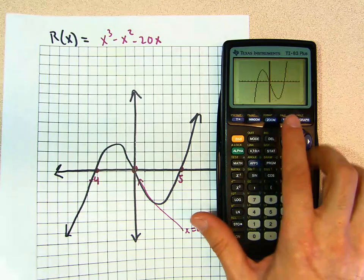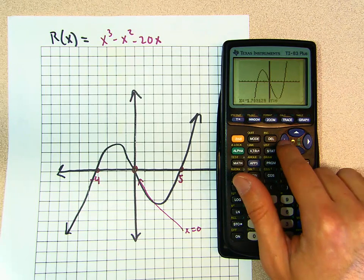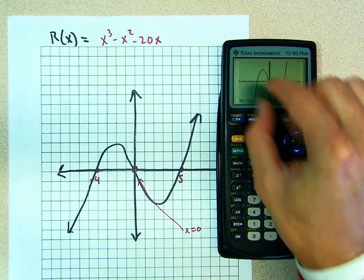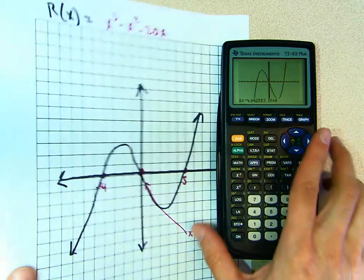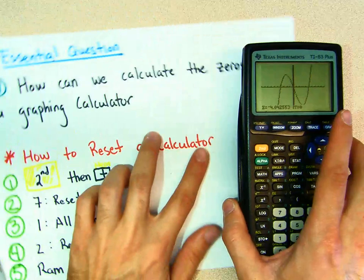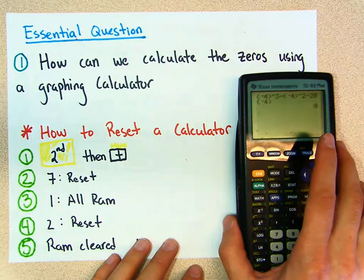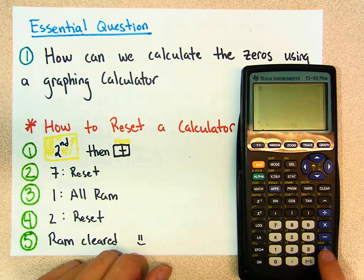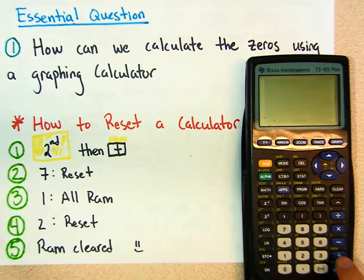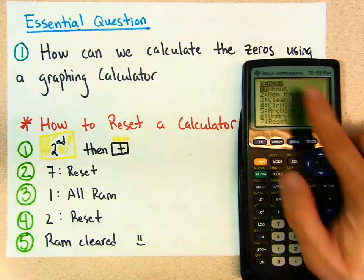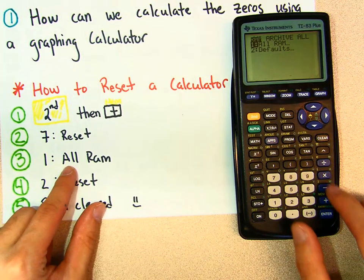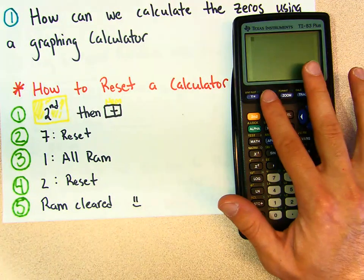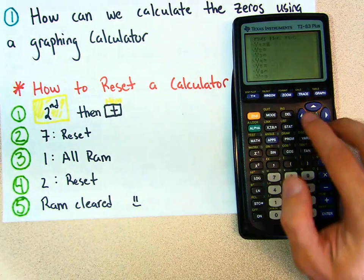We could actually find the zeros with the calculator — but just eyeballing left and right doesn't lock in exactly, like it doesn't show me negative 4 precisely. How do you tell the calculator to lock in exactly? First thing: anytime we use the calculator, we want to reset it just in case there's anything funky. To reset: hit second, then the plus sign — notice above it says MEM for memory. Hit memory, go down to 7 which is reset, hit enter, then all RAM, enter, then reset, enter — RAM is cleared, happy face. Notice the window is back to default and the function was erased.